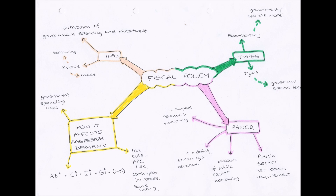The PSNCR is a measure of public sector borrowing — how much government departments will borrow. If there is a negative PSNCR, then a government budget surplus is being run, where more money is coming into the government's account in the form of tax revenue than they are borrowing. If the PSNCR is positive, we have a government budget deficit, where borrowing is greater than revenue from tax.